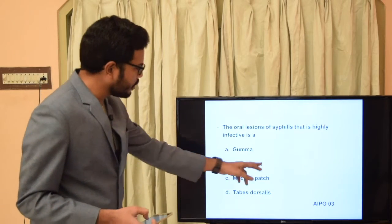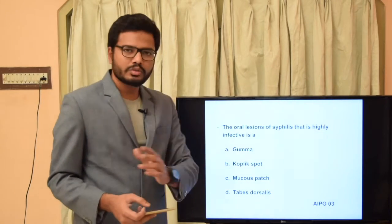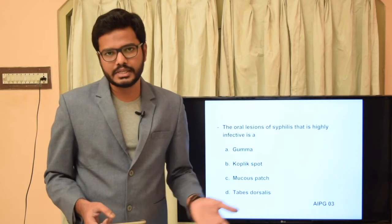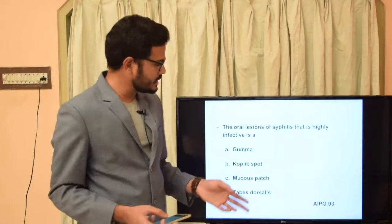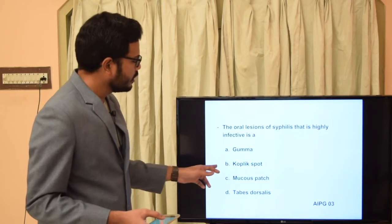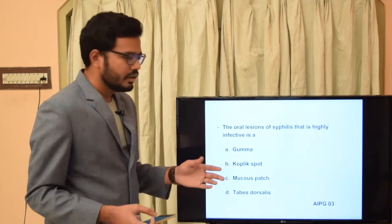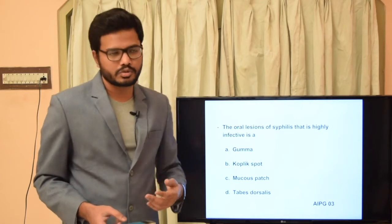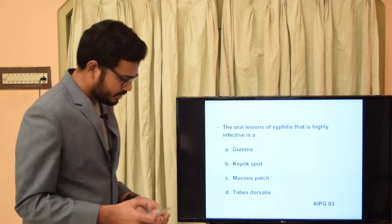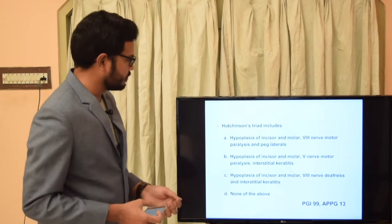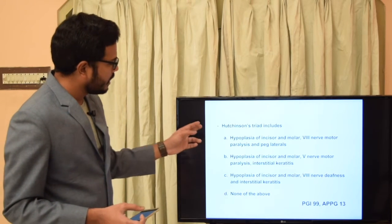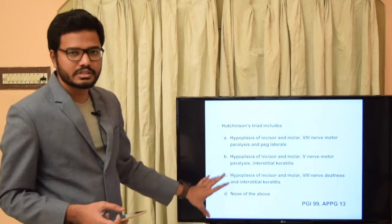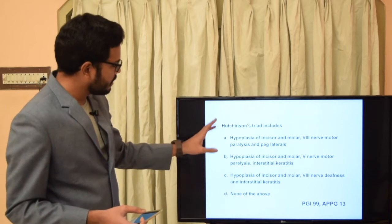Koplik spots are seen two to three days prior to the manifestation of measles — they are intraoral white lesions seen along the molars and premolars on the buccal mucosa. Gumma has already been discussed. Coming to the next question: Hutchinson's triad includes which combination?